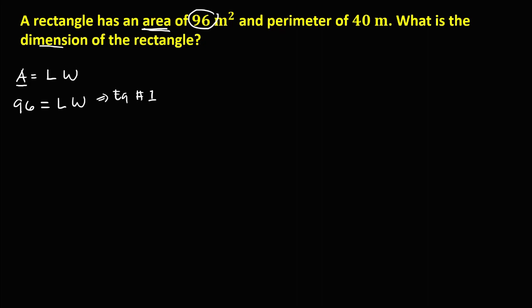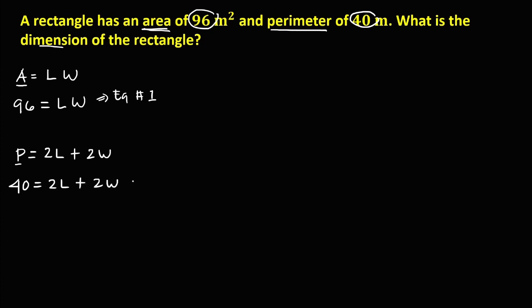To find equation number two, from the given perimeter and the formula for the perimeter of a rectangle, that's 2L plus 2W. Substituting the value for the perimeter, this becomes 40 equals 2 length plus 2 width. Since these numbers are divisible by 2, we divide through by 2, giving us 20 equals length plus width. This is equation number two.